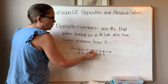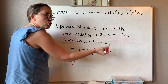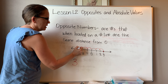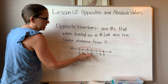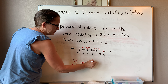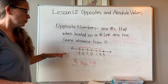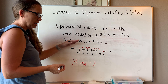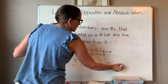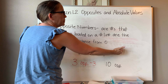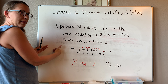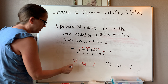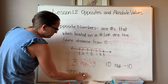So opposite numbers are numbers that when located on a number line are the same distance from zero. Let's look at a number line — I have negative three through positive three marked. If I had the number three, the opposite of three is the same distance from zero. Three is three jumps from zero, so the opposite of three is also three jumps, but the other way — that gives us negative three. So the opposite of three is negative three.